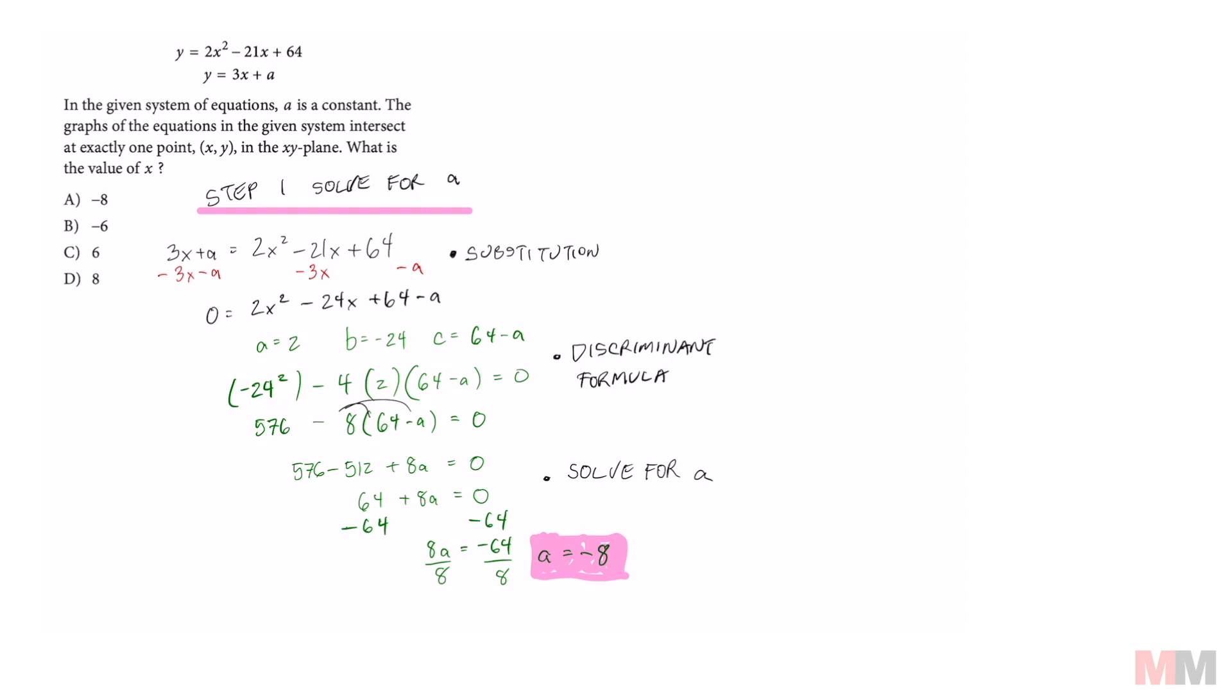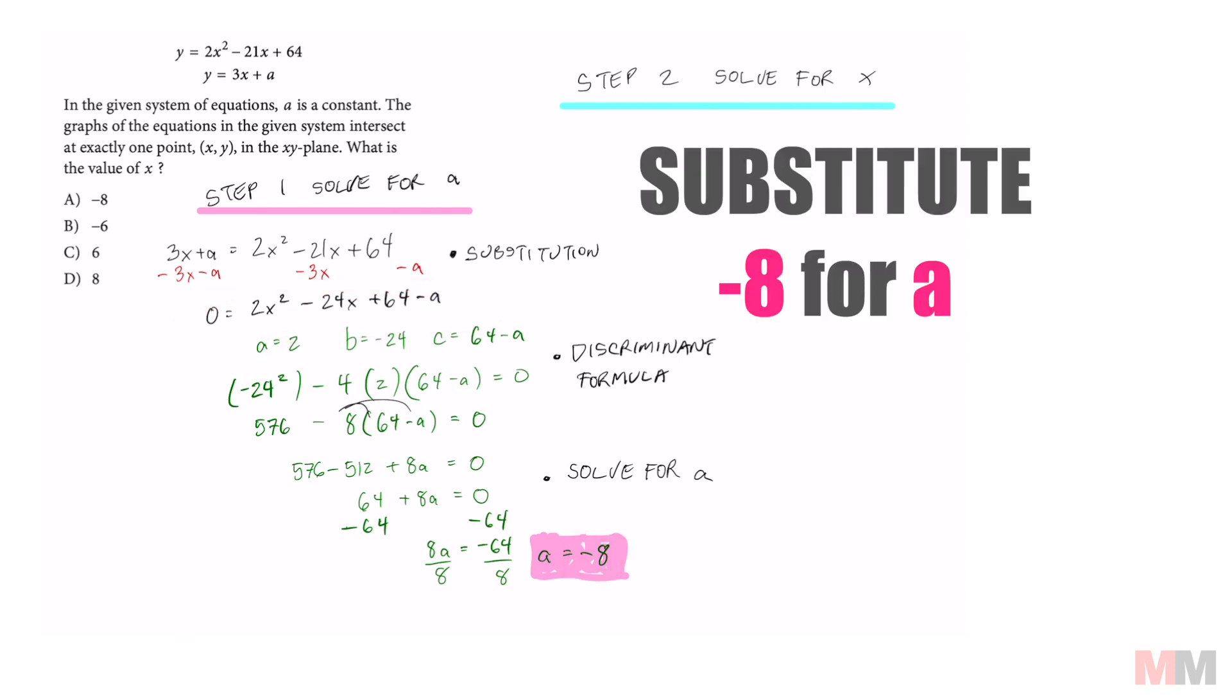Now that we got A, we can move on to step 2, which is solving for X. So we're going to use this equation right here. And instead of A, we're going to substitute negative 8. Just be careful when you're plugging in A because I made a small mistake.